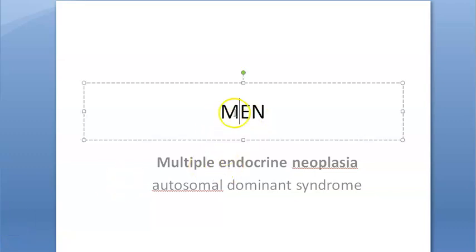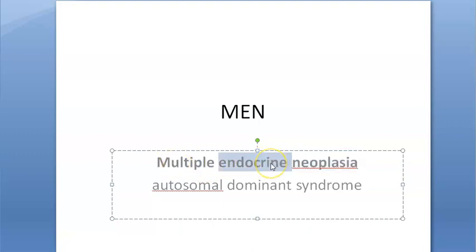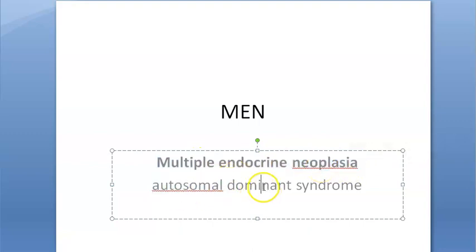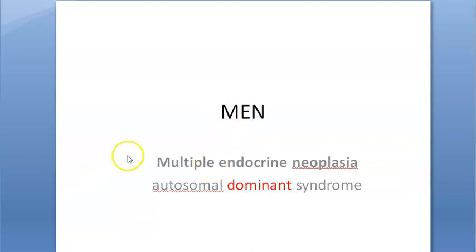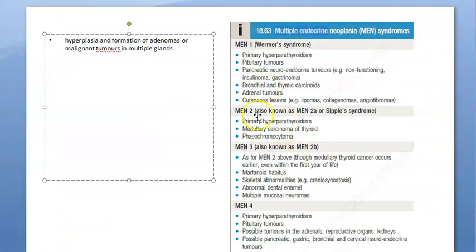In this video let us look at MEN - Multiple Endocrine Neoplasia. Multiple endocrine neoplasia means these people have neoplasia in multiple endocrine glands, not one endocrine gland. MEN 1 means they'll have pituitary adenoma, parathyroid hyperplasia, pancreatic tumor, etc. MEN 2 means something else is affected, MEN 2B means something else is affected.